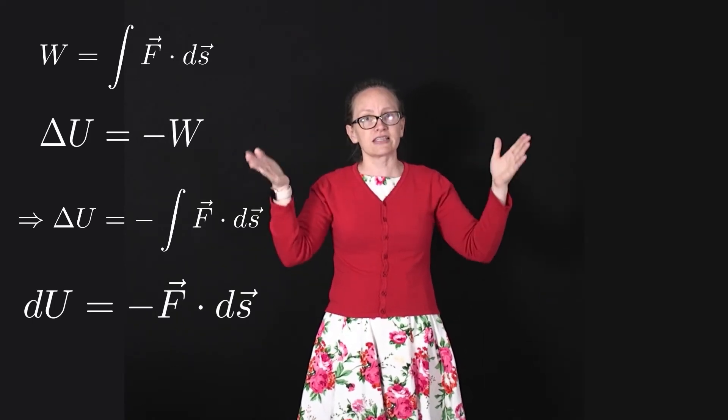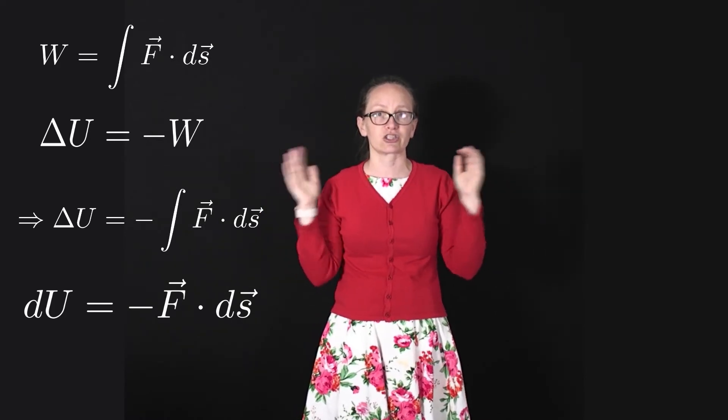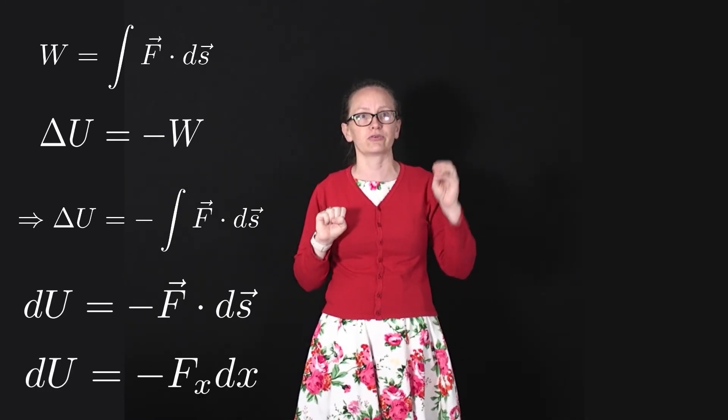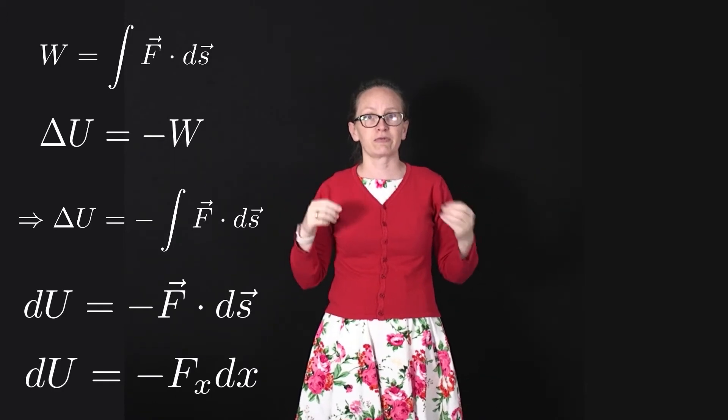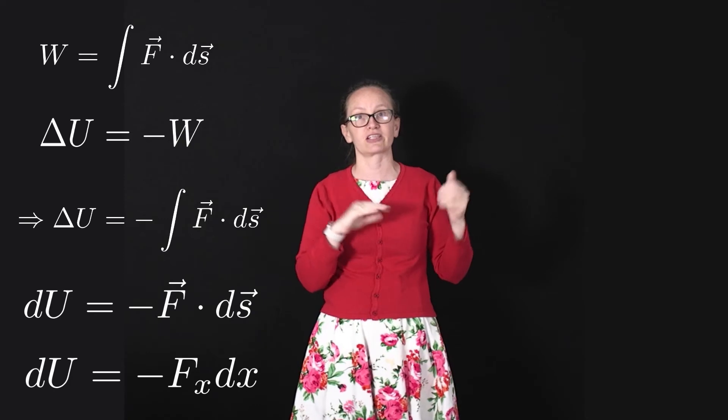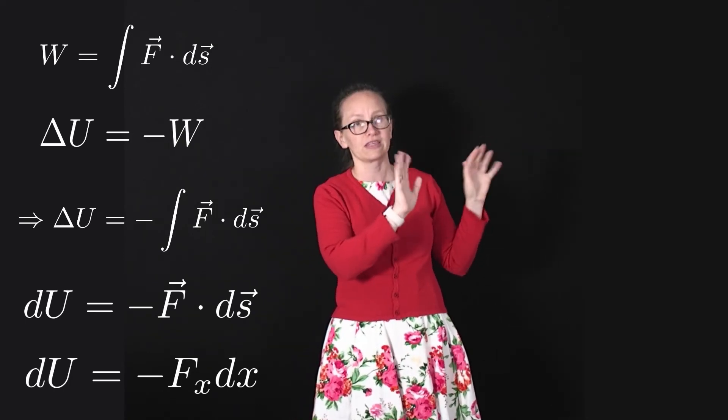Now this is a vector equation, but let's for a moment just suppose that this is just moving in one dimension. In that case, we can write dU is equal to minus F_x dx. Now, of course, if it was moving in other dimensions as well, we'd just want to add those on. So we'd have an additional F_y dy and F_z dz with the negative sign.